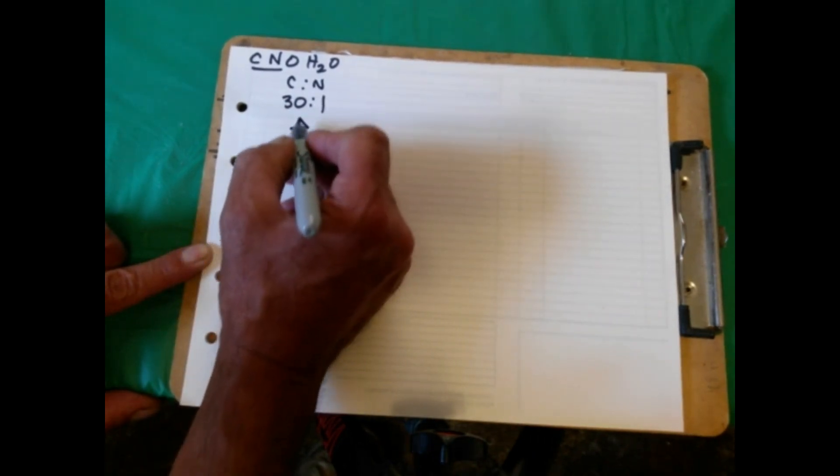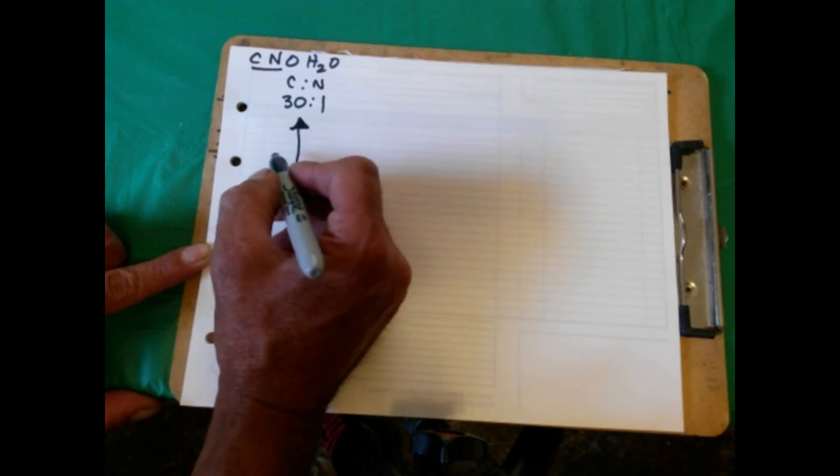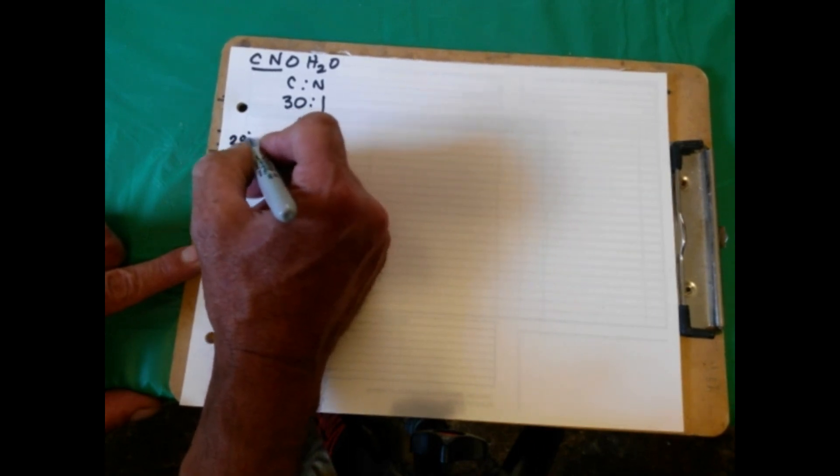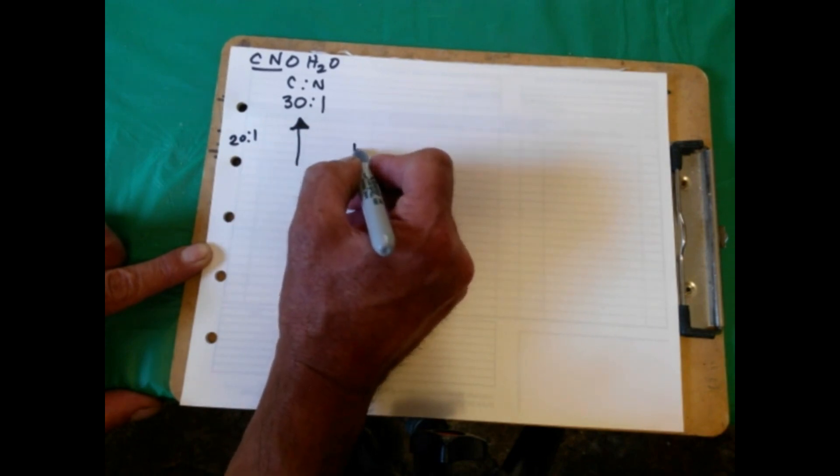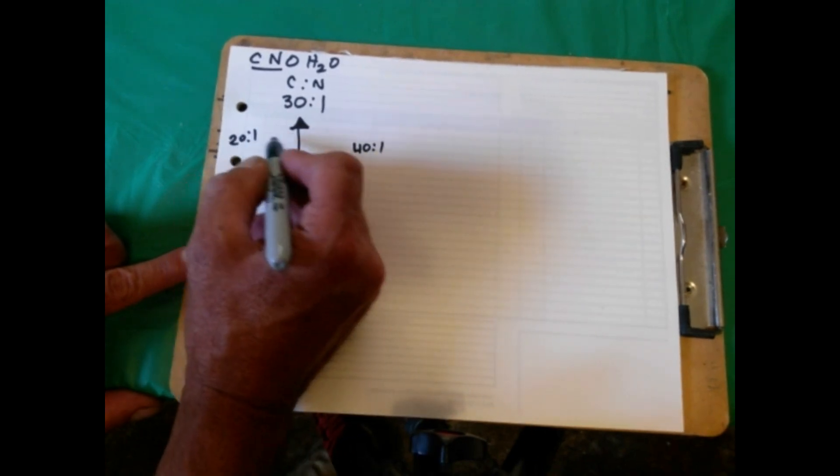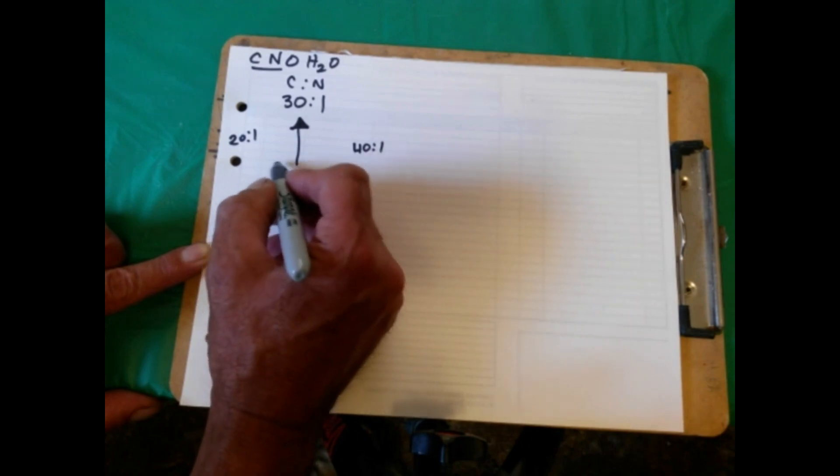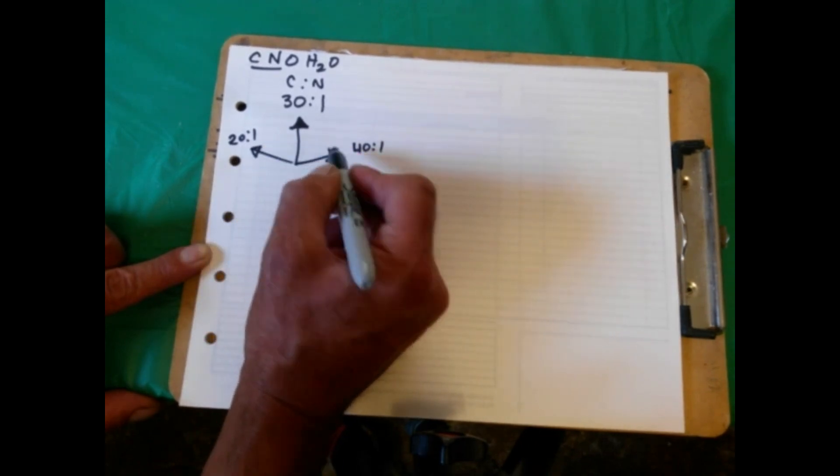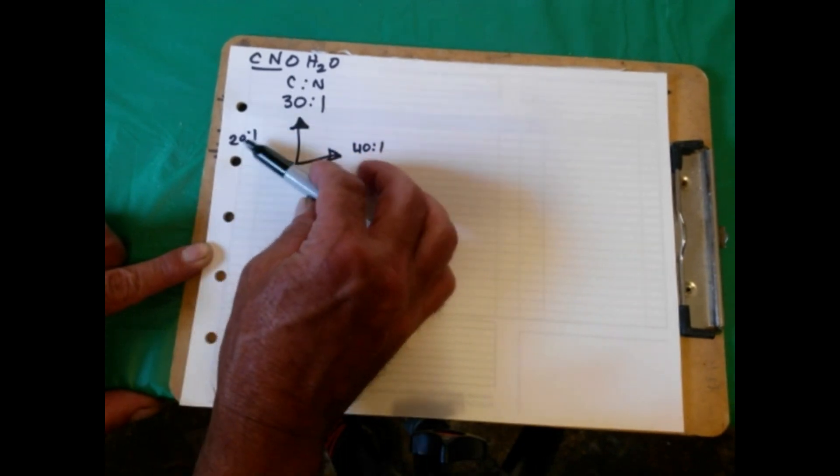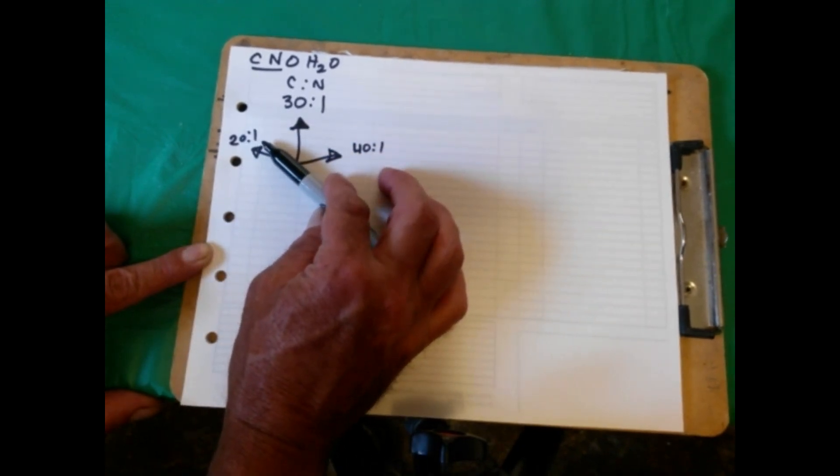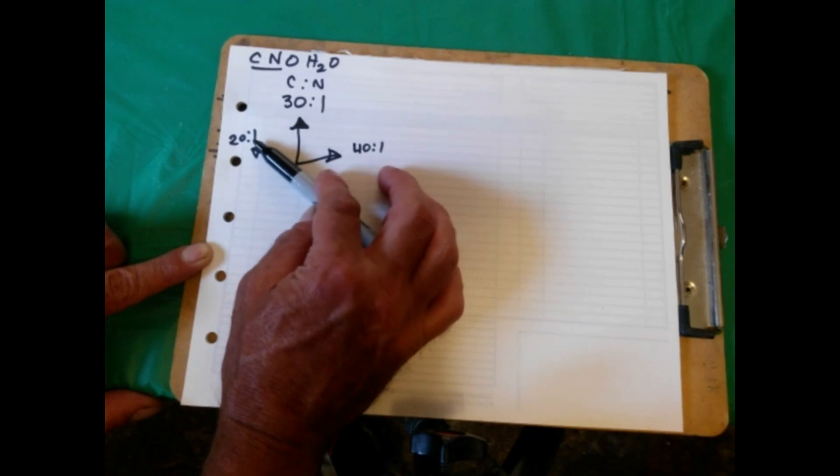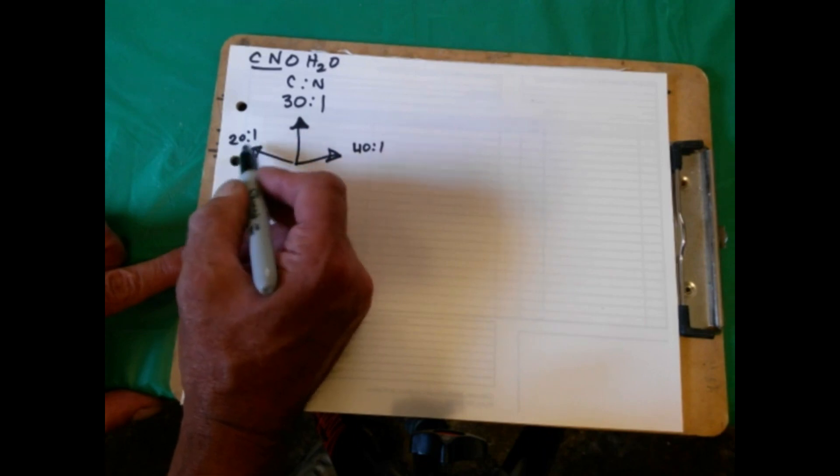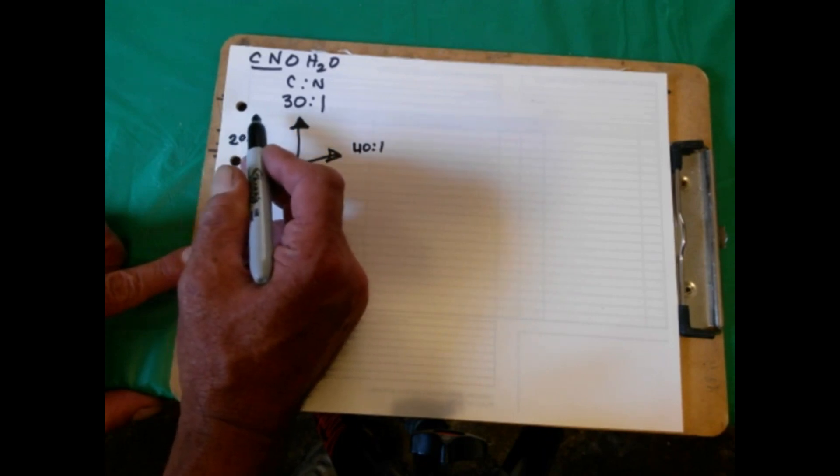This is your optimal ratio. Now this will work from about 20 to one to 40 to one. If you're leaning this way, this means you have more nitrogen, and when you have more nitrogen in your pile, it starts to stink.